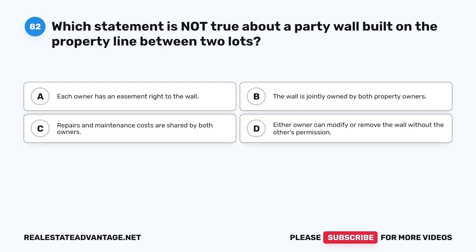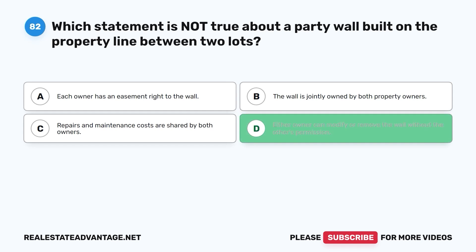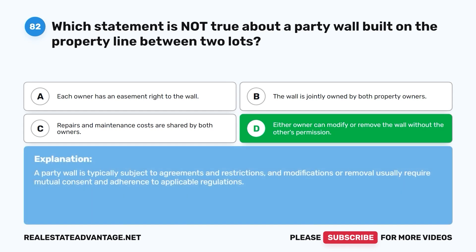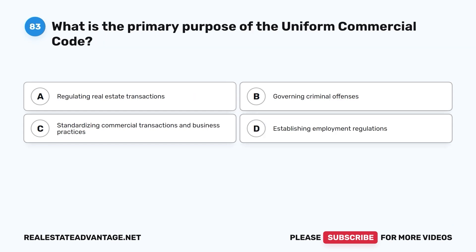Question 82: Which statement is not true about a party wall built on the property line between two lots? A. Each owner has an easement right to the wall. B. The wall is jointly owned by both property owners. C. Repairs and maintenance costs are shared by both owners. D. Either owner can modify or remove the wall without the other's permission. The correct answer is D. A party wall is typically subject to agreements and restrictions; modifications or removal usually require mutual consent and adherence to applicable regulations.